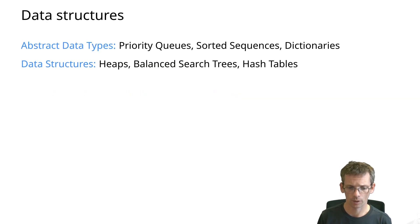So basic data structures. On one side, we have abstract data types: priority queues, sorted sequences, dictionaries, and then also corresponding data structures. Priority queues, we typically use heaps. Sorted sequences, balanced binary search trees. Dictionaries, hash tables are the obvious choice.